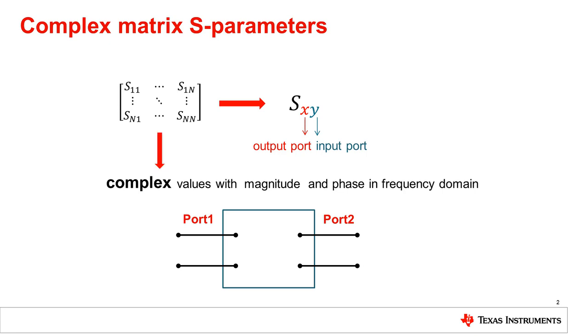S-parameters are complex values, having real and imaginary parts or magnitude and phase parts in the frequency domain. When a complex time-varying signal is passed through a linear network, the amplitude and phase shifts can dramatically distort the time domain waveform. Therefore, both amplitude and phase information in the frequency domain are important for high-frequency device characterization.